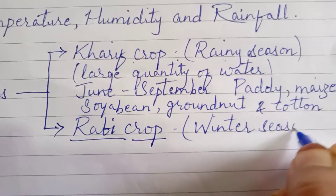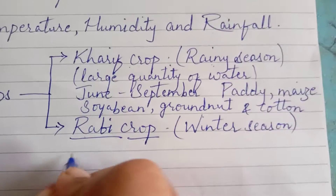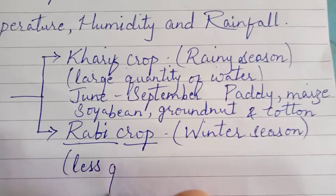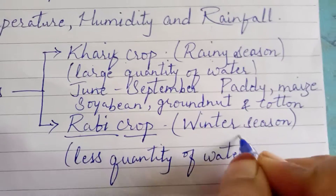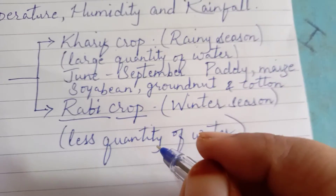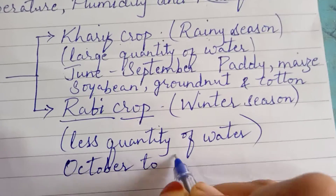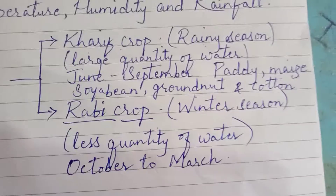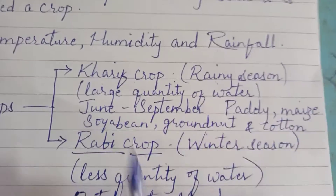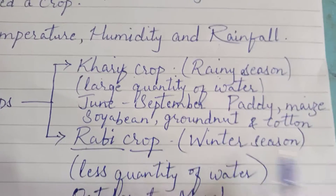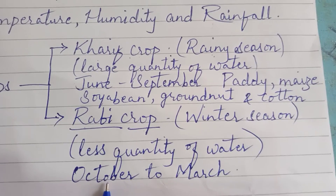Next we have Rabi crops. These crops are grown in winter season. Unlike Kharif crops, they require less quantity of water. The winter season in India is generally from October to March. We are referring to these months based on the Indian climate.